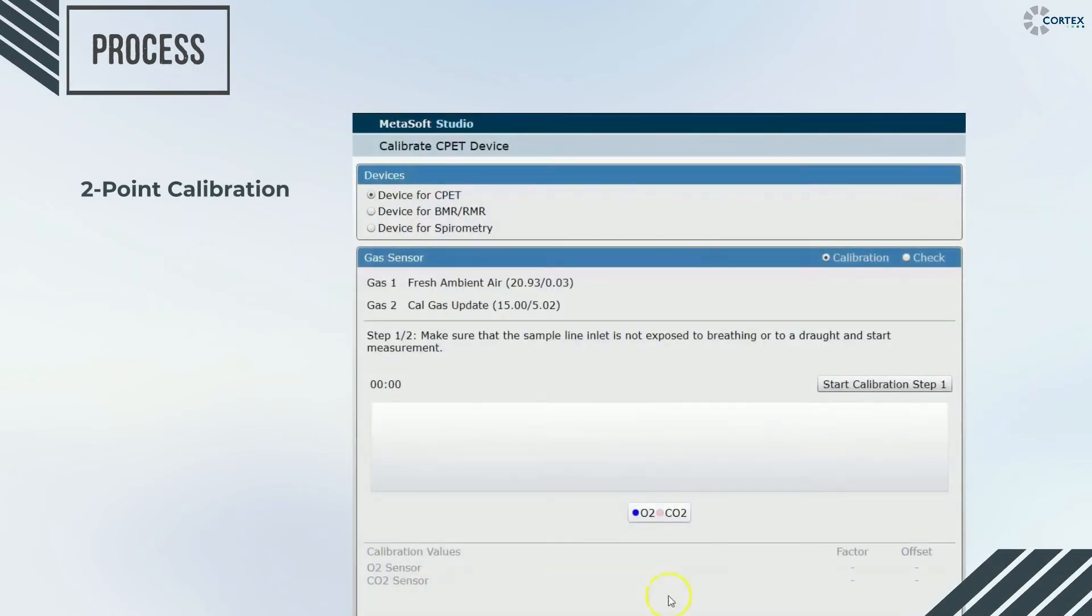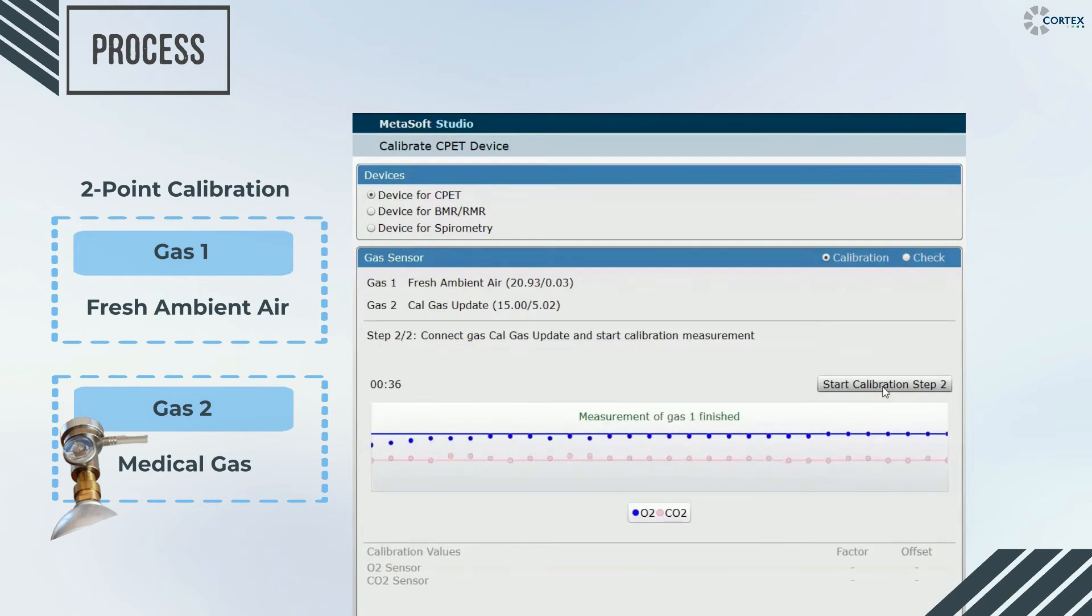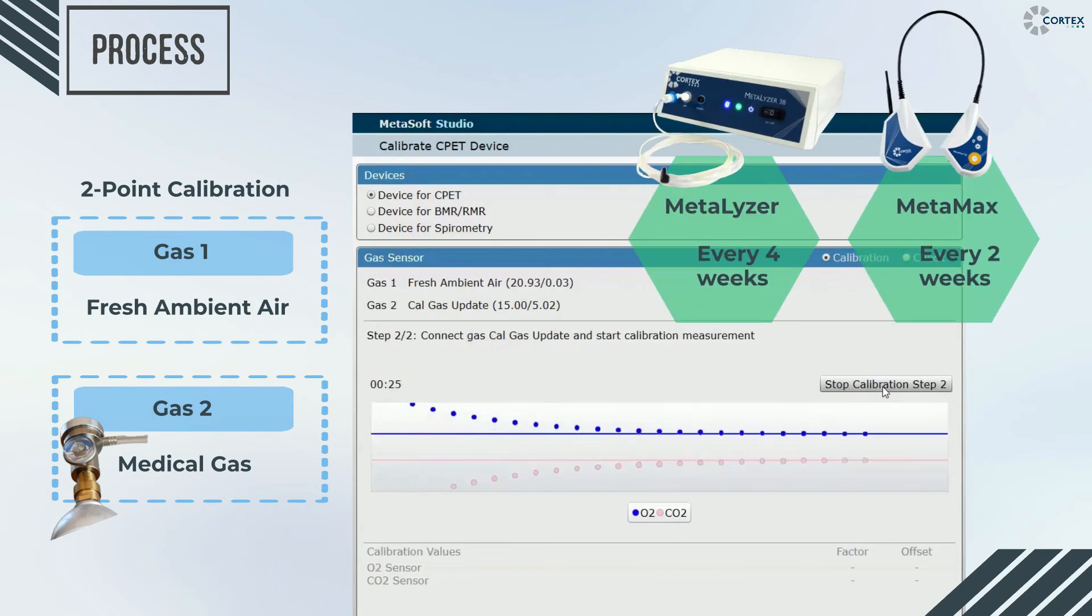The two-point calibration consists of two steps: sampling of the ambient air and sampling of the medical gas. By reading these two values, we check for any potential drifts of the sensor. As depicted on the clip, the intervals of a two-point calibration are performed every two or four weeks for each respective device.